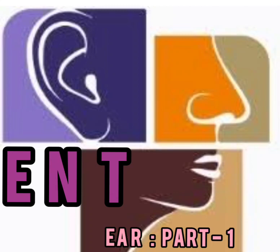The lobule is also devoid of cartilage, hence it is the safest site for piercing. The parts of the pinna are: triangular fossa, incisura terminalis, external acoustic meatus, tragus, lobule, concha, antihelix, helix, and antitragus. The skin over the pinna is loosely adherent on the medial or cranial side, hence it is pinchable. The skin is firmly adherent to the perichondrium on the lateral side and is non-pinchable.